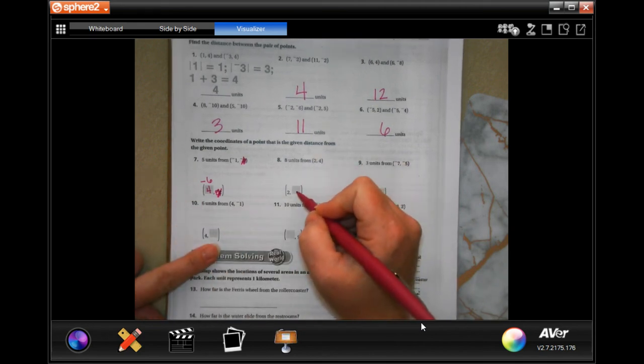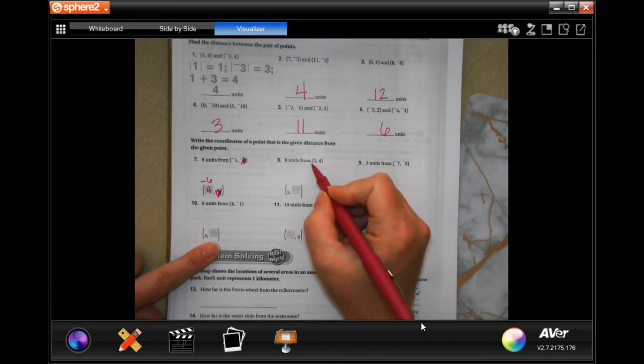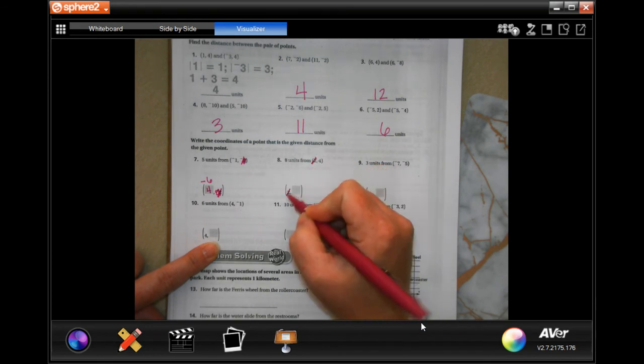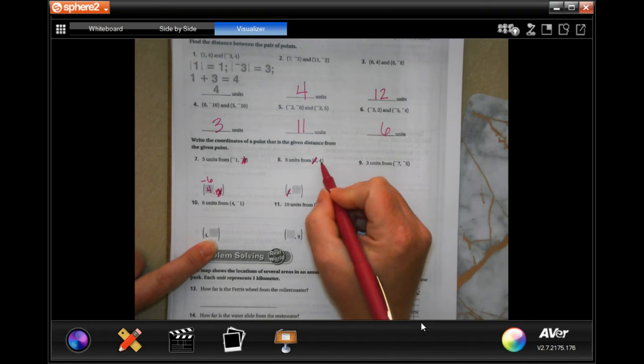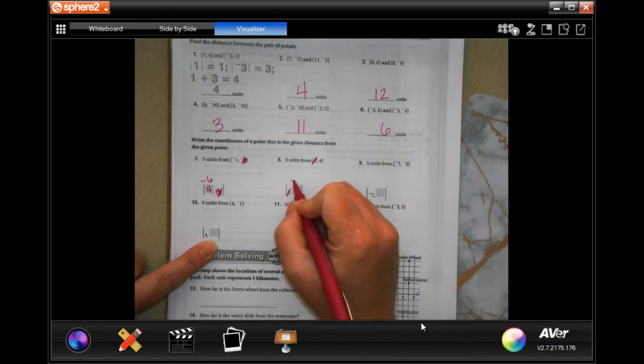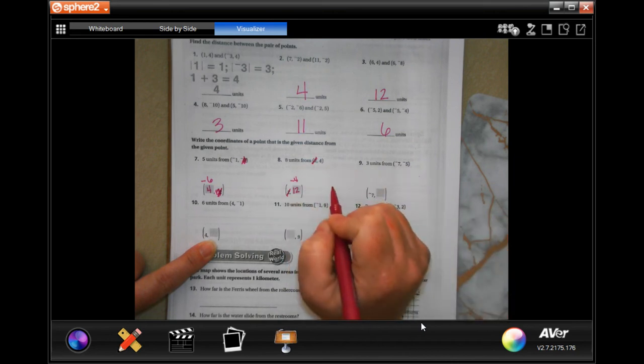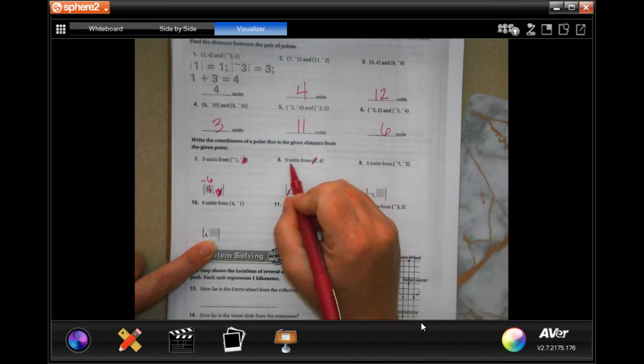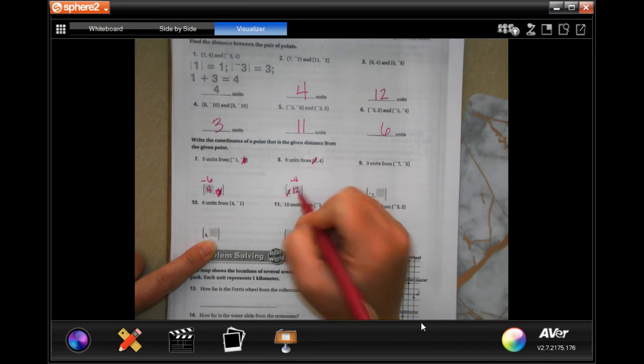This one: eight units from the four. The two is exactly the same, it's giving you one of those coordinates so I don't need to know about those. Eight units from four, so I can either have negative four or I can have twelve. Four if I subtracted eight I would get negative four, or if I added eight I would get twelve.